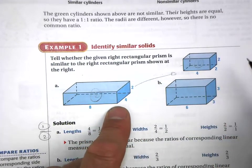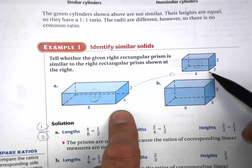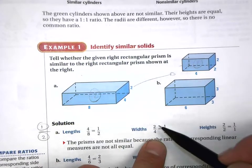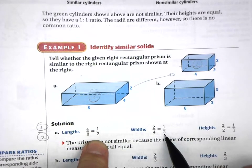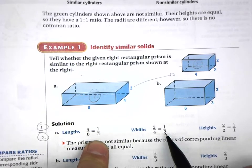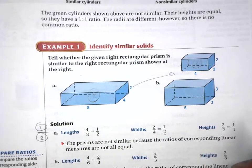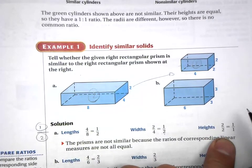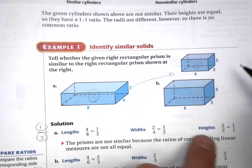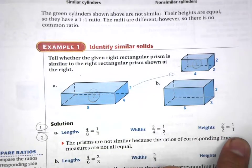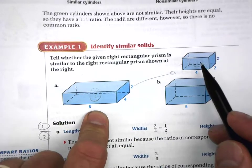Looking at the widths: two over four reduces down to one half, so so far these two solids appear similar. But I also need to check the height — each dimension must confirm the same ratio. The heights on these two solids are both 2, so two over two reduces to 1. That is a different ratio, and therefore these two solids are NOT similar to each other.